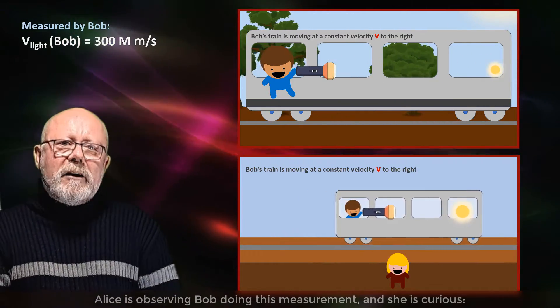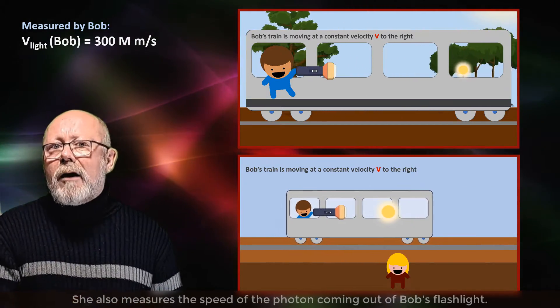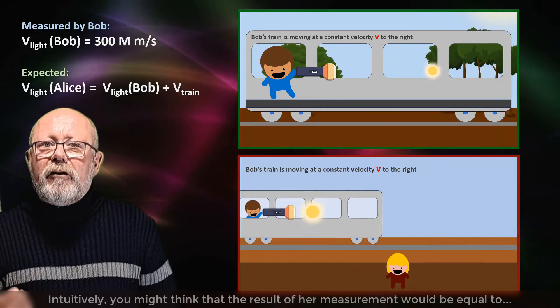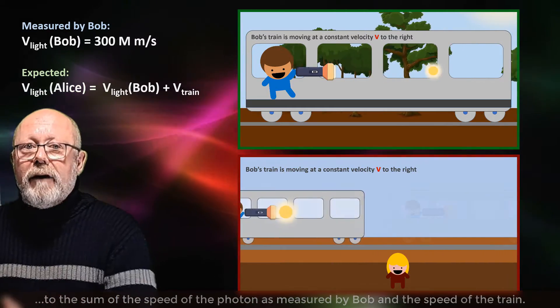and finds out that the photon is travelling at a speed of 300 million meters per second. Alice is observing Bob doing this measurement, and she is curious. She also measures the speed of the photon coming out of Bob's flashlight. Intuitively, you might think that the result of her measurement would be equal to the sum of the speed of the photon as measured by Bob and the speed of the train.